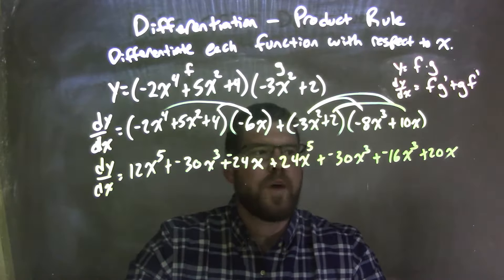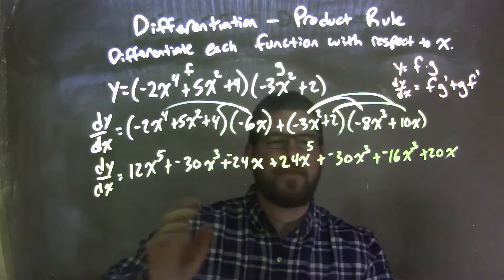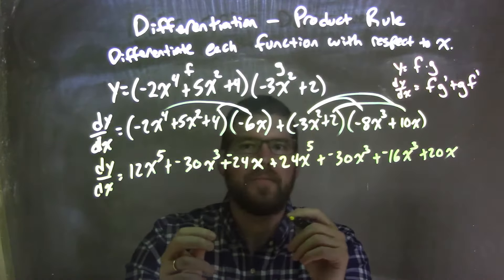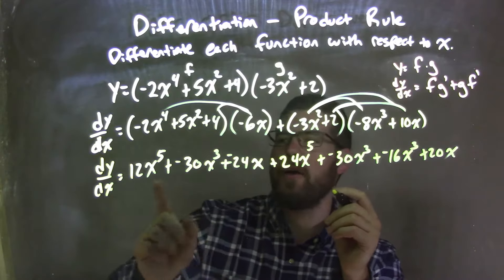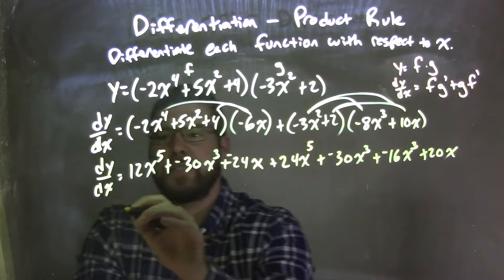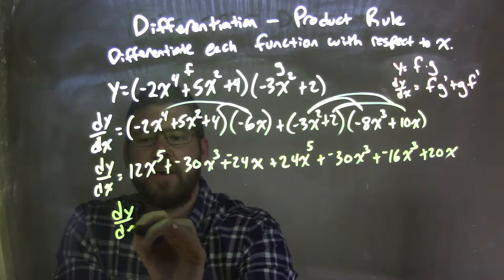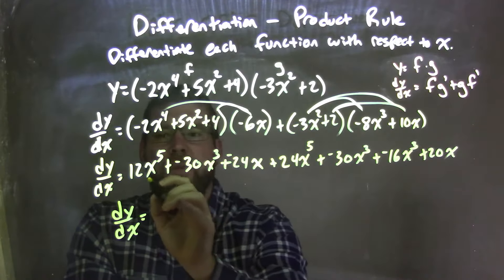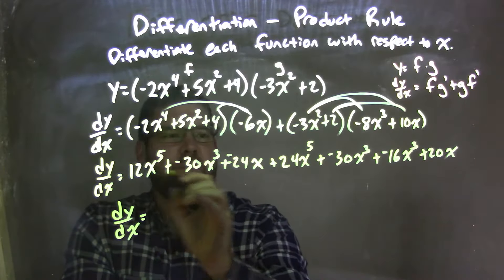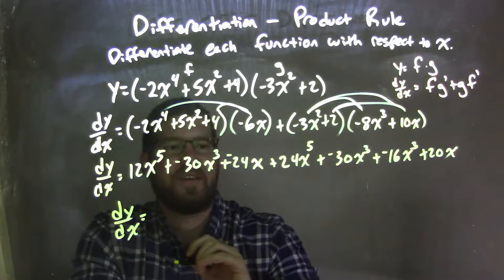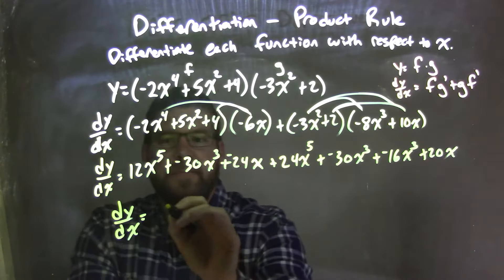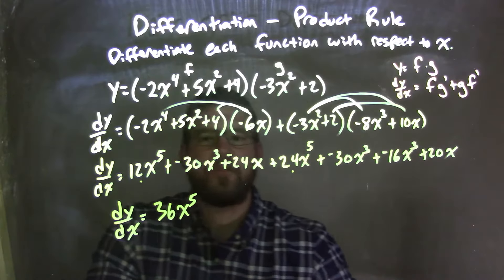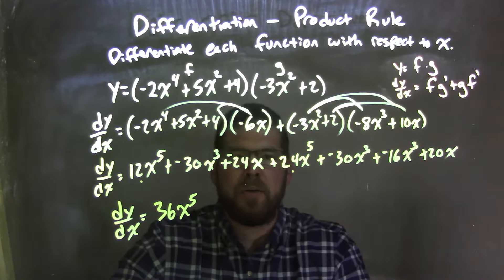So now we have our final like terms — combine them together, highest degrees first. The highest degrees I see are to the 5th power, and I have two of them. So dy/dx: 12x to the 5th plus 24x to the 5th is 36, positive 36x to the 5th. I'll mark these two to show that I've brought them down.